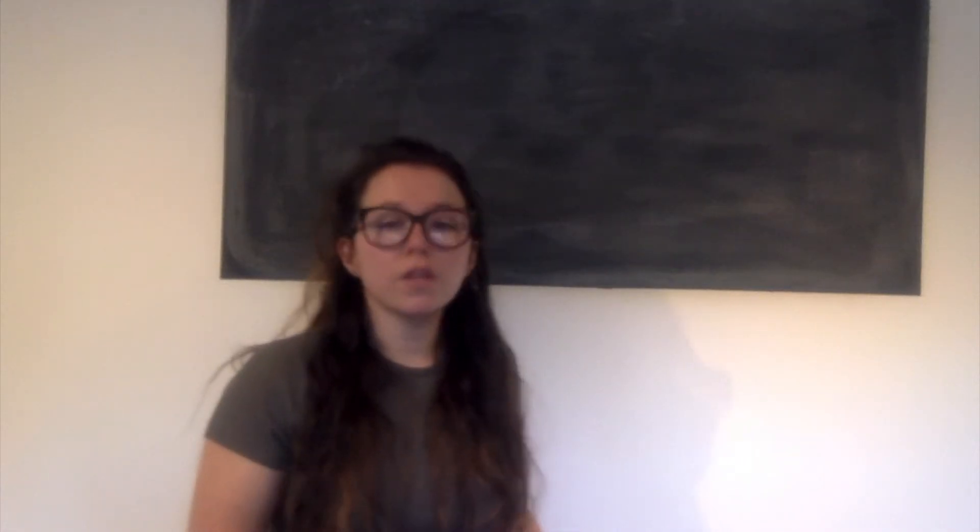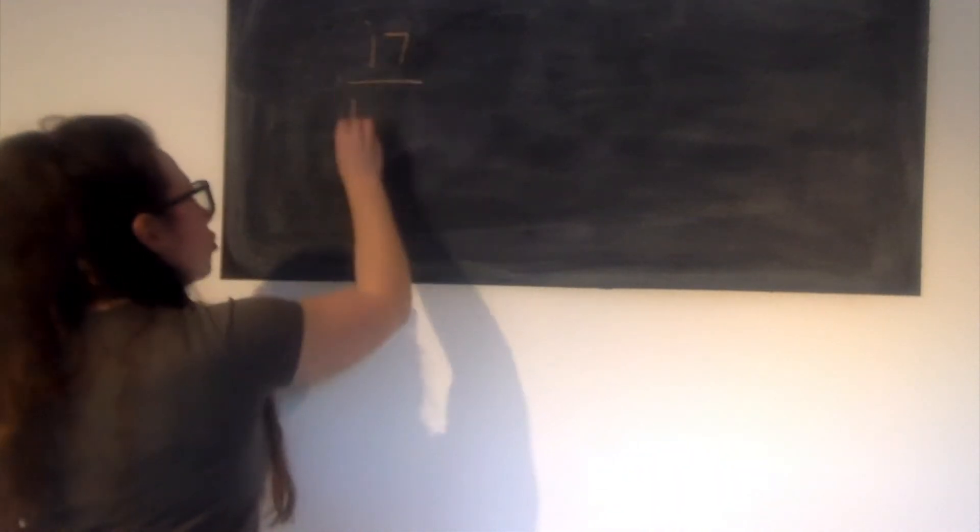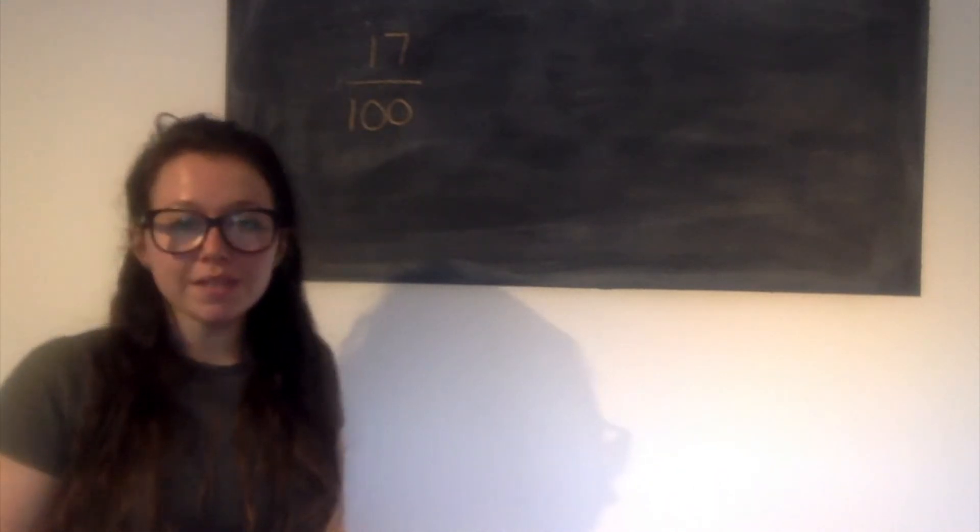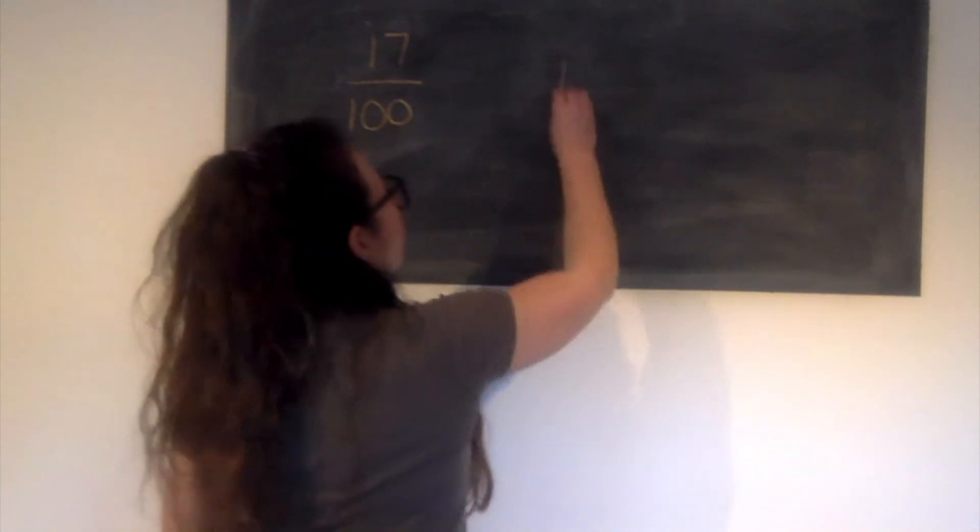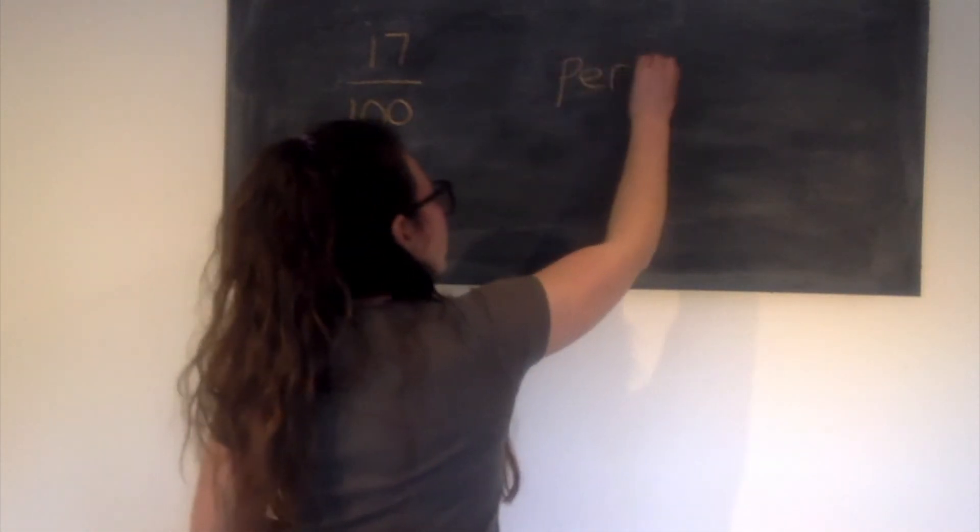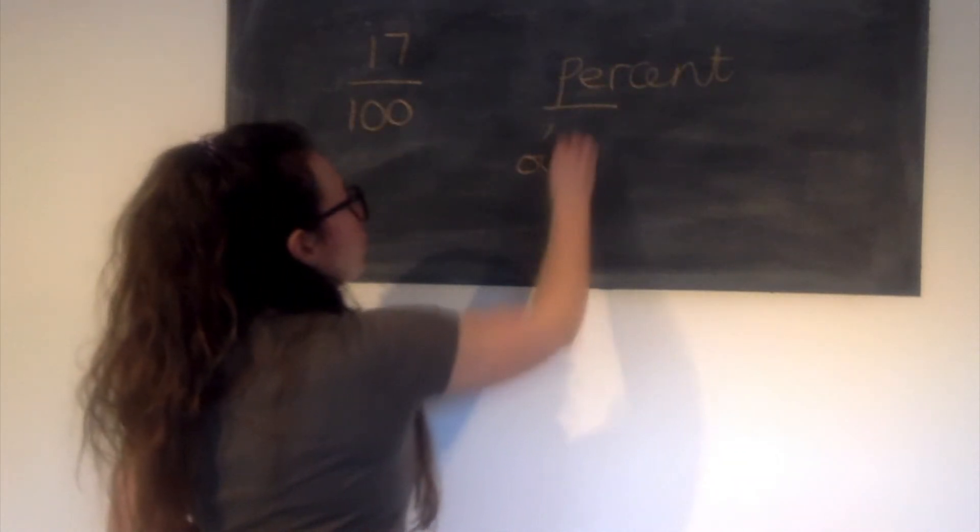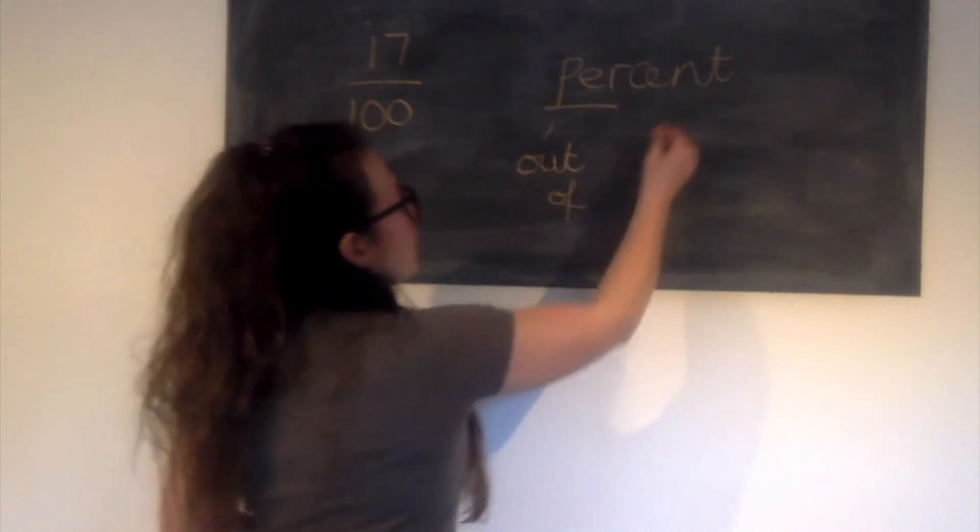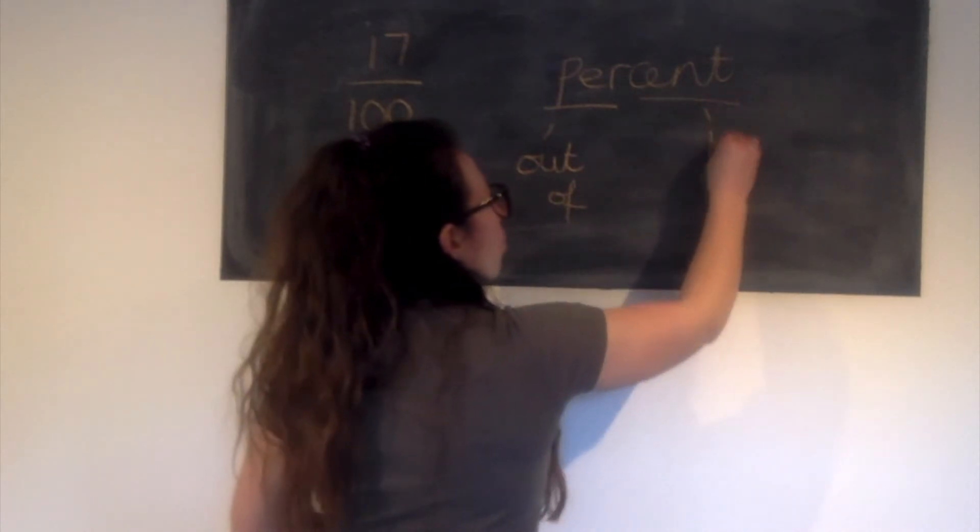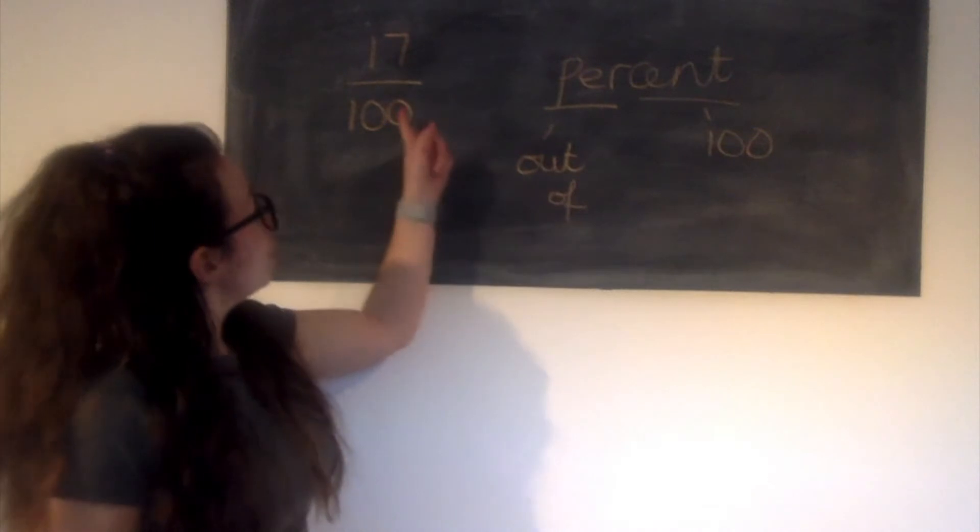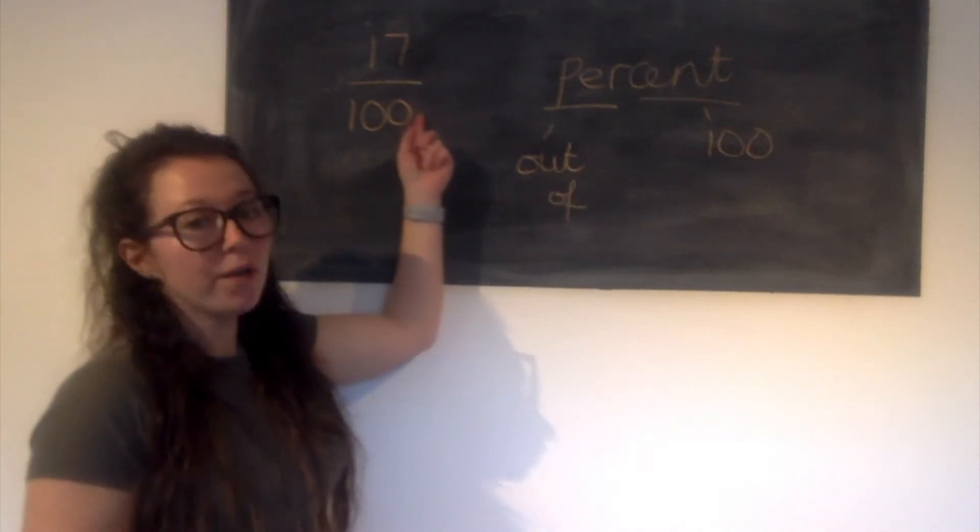Hopefully you recognized that there were 17 out of 100 squares that were shaded. So as a fraction that gives us 17 hundredths. Now as a percentage, let's think about and remember what percent means. Well, per means out of and cent, remember, means 100.